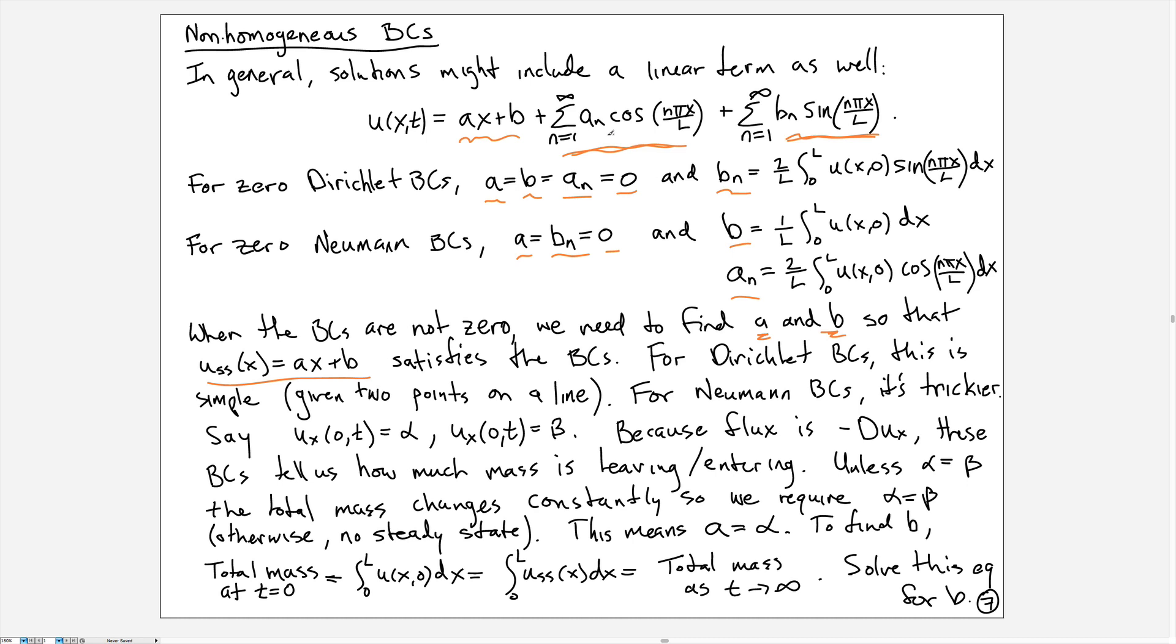If the boundary conditions are Neumann, the cosine functions have zero slope and don't modify the required slope from the steady state. If the problem is Dirichlet, then the sine functions don't modify the value of the function at the boundary from the steady state, which will correctly match those.